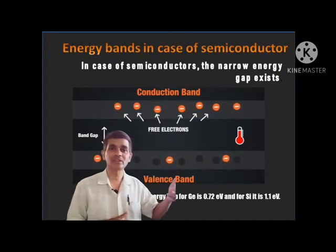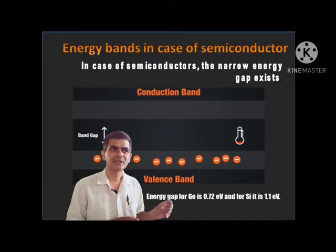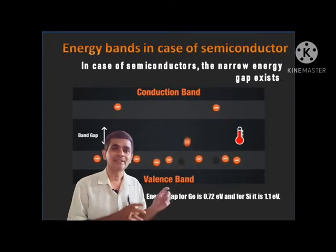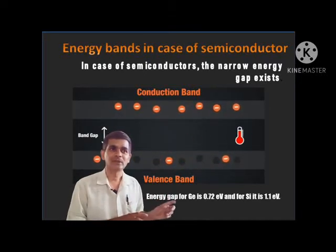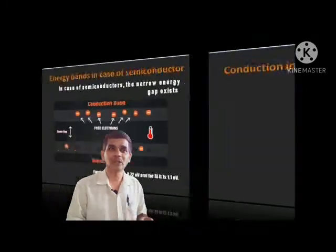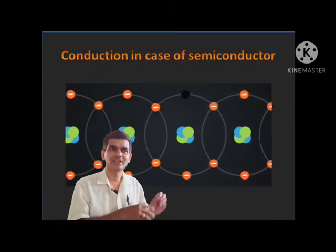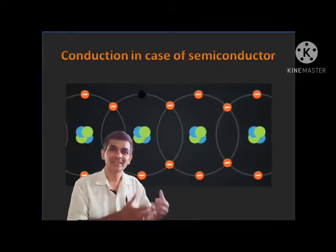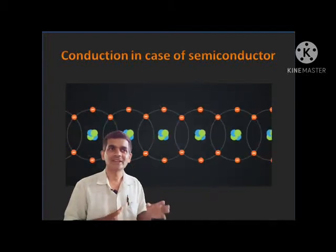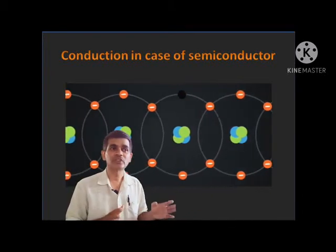The electrons present in the conduction band are called free electrons. You can observe in the picture there will be a hole present — a vacancy in a lattice site. That vacancy created because of the transition of electrons from valence band to conduction band can be occupied by neighboring electrons. As the electron moves, that vacancy also shifts in the opposite direction. In a semiconductor, there are two types of charge carriers: holes and electrons.